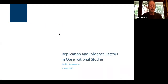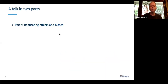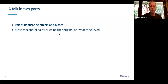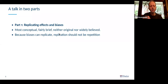It's a pleasure to be with you today. I'd like to talk about replication and evidence factors in observational studies. This is a talk in two parts. The first part is about replication and how biases can replicate — it's mostly conceptual, fairly brief, and not original to me. Because biases can replicate, replication should not be repetition. That's the main piece of the first part.